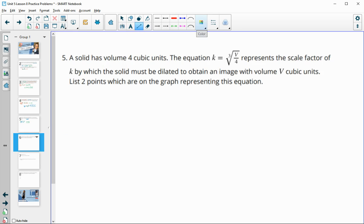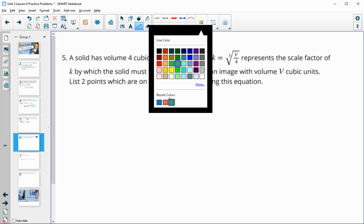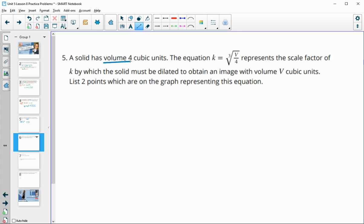Number five, a solid has a volume of four cubic units, and this equation represents the scale factor by which a solid must be dilated to obtain the image with a volume of V cubic units. List two points that are on the graph of this. So you just get to pick points that you're going to plug into this equation. I like to pick a number that's divisible by four. You can pick anything.